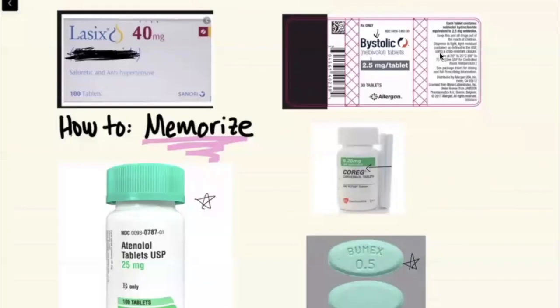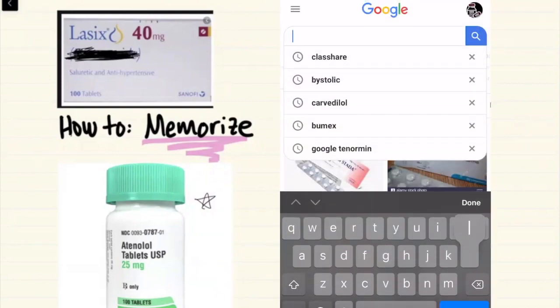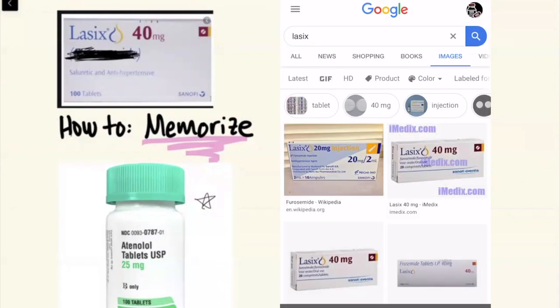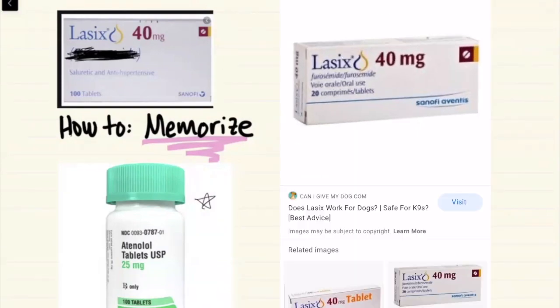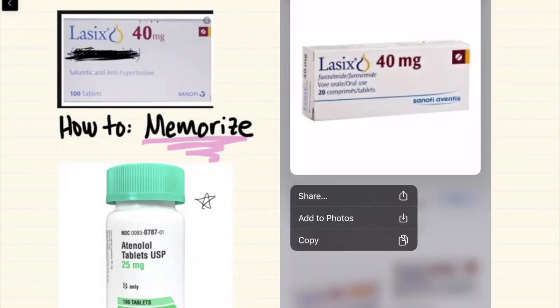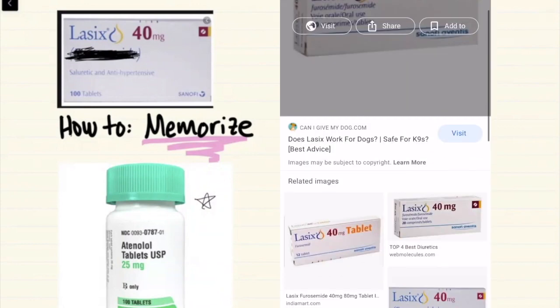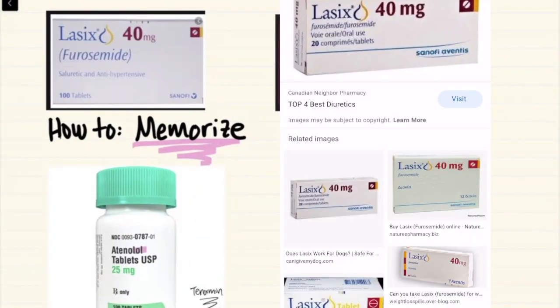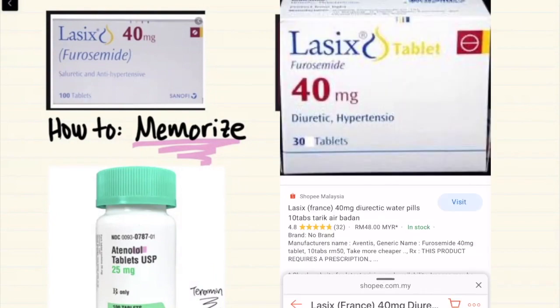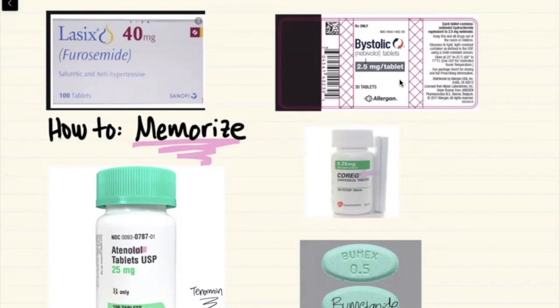One method you could use for memorizing drugs is to go ahead and search a brand name such as Lasix, go to Google images, and then you'll see Lasix furosemide pop up in several images. So with this method, you could see that you're going to start to associate the generic and the brand names together. So here are just some Google images that I put together, for example Lasix furosemide.